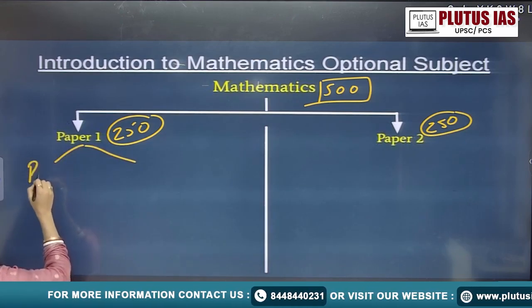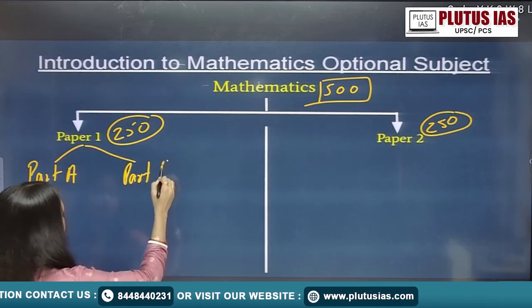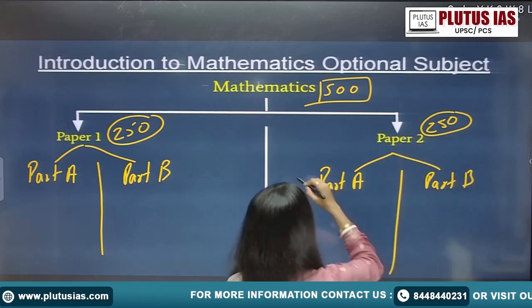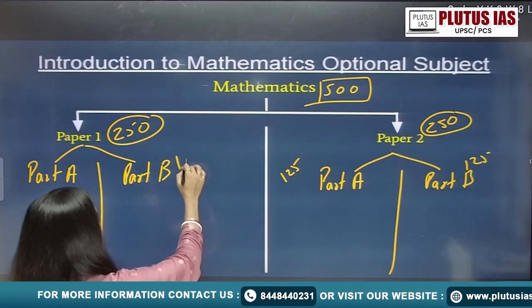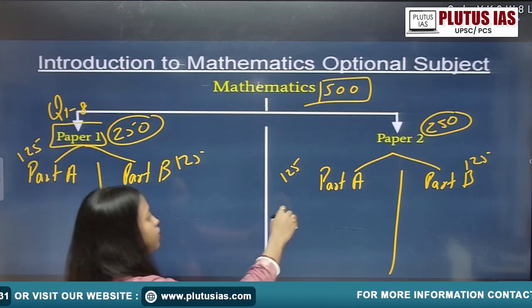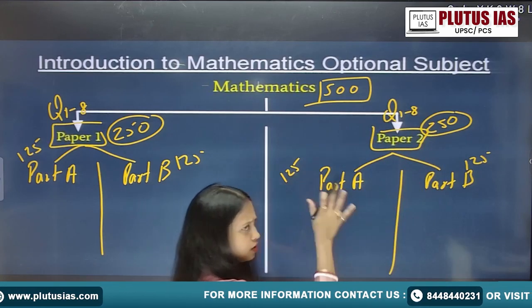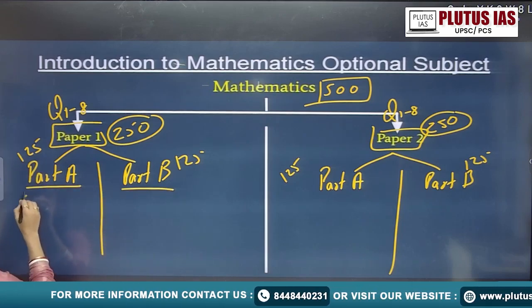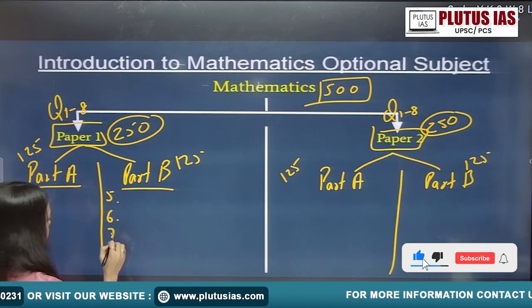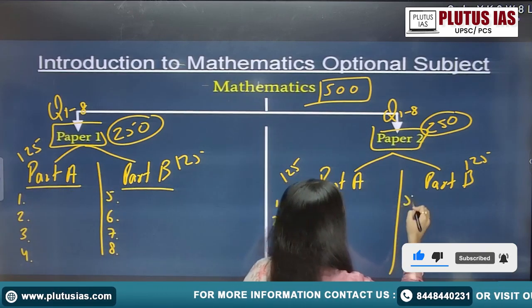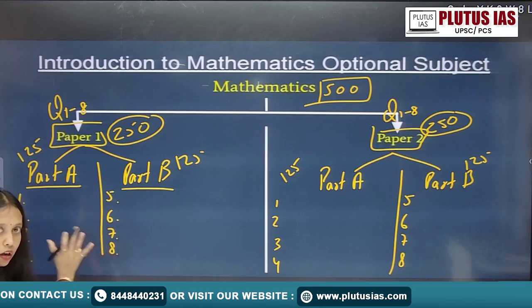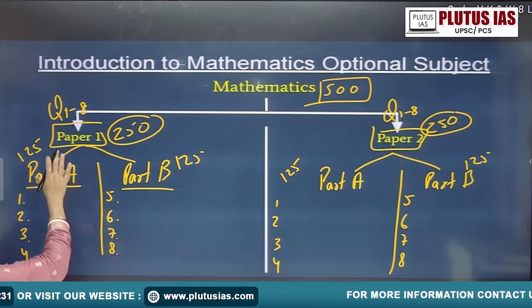Each paper is distributed into two parts — Part A and Part B — both carrying 125 marks each. Paper 1 has questions one to eight, and Paper 2 also has questions one to eight. The pattern is exactly the same for both papers. Part A has four questions and Part B has four questions, with question numbers arranged accordingly.